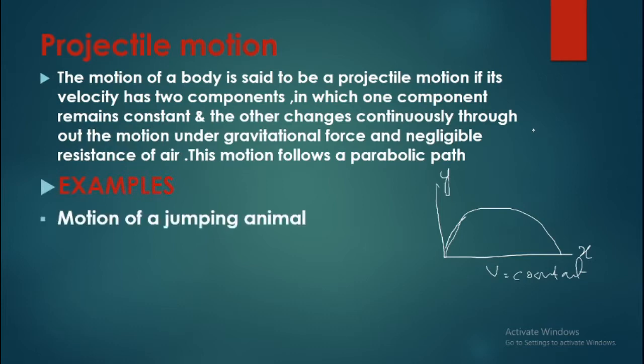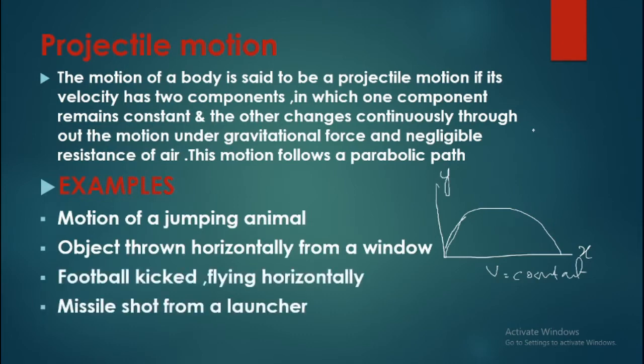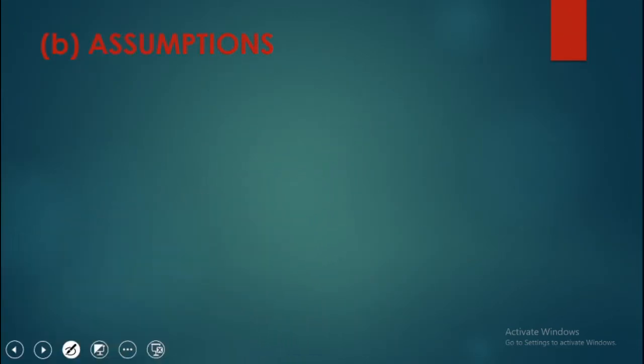What are the examples of projectile motion? Motion of a jumping animal, an object thrown horizontally from a window, a football kicked horizontally, and a missile shot from a launcher. These are all examples of projectile motion. We have to make some assumptions.